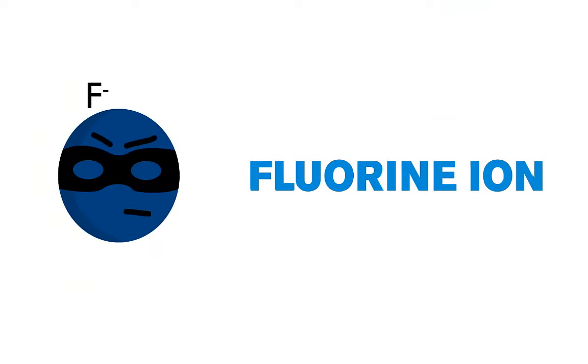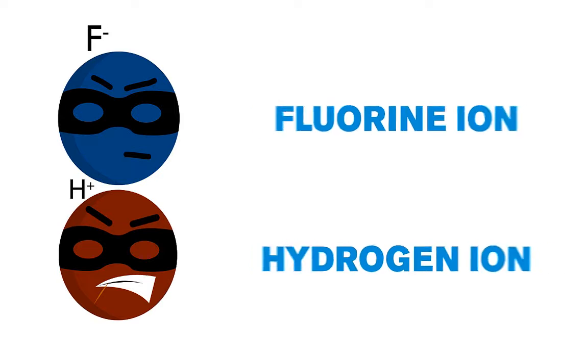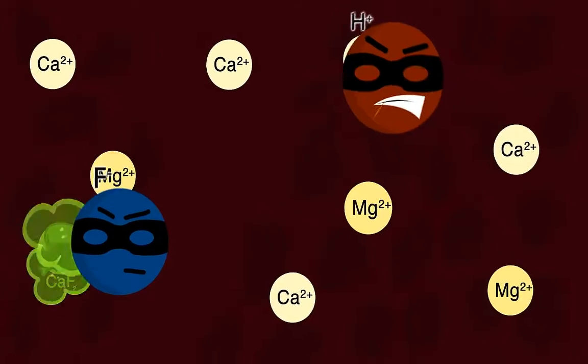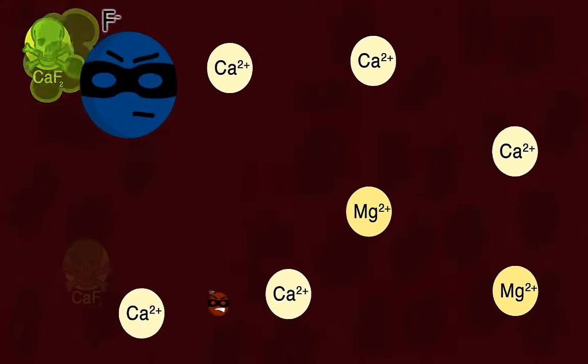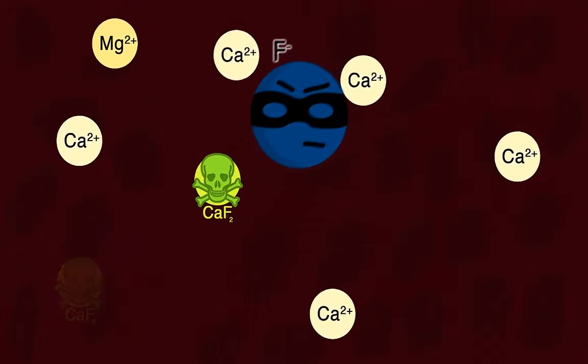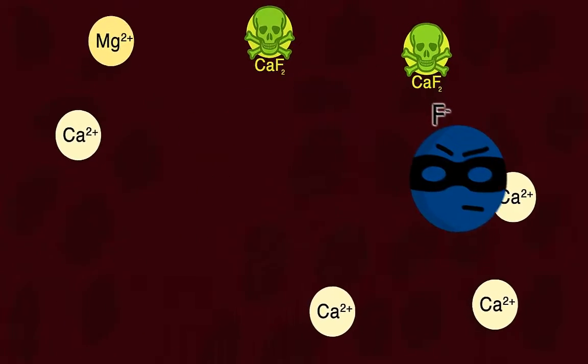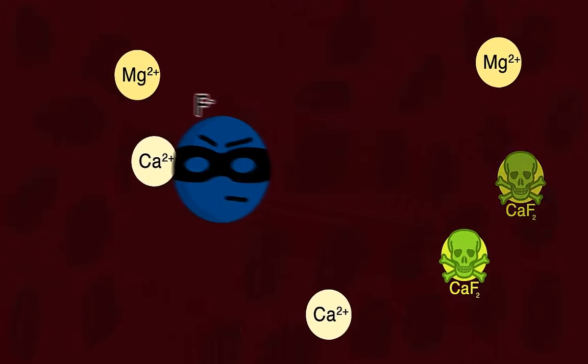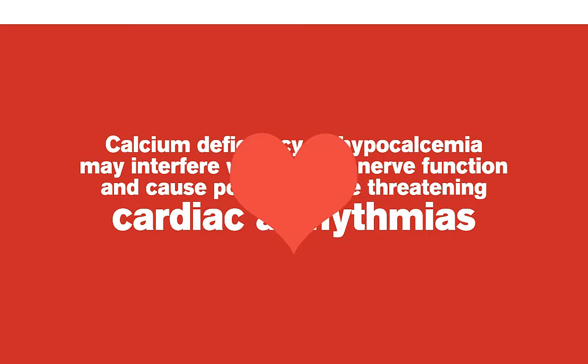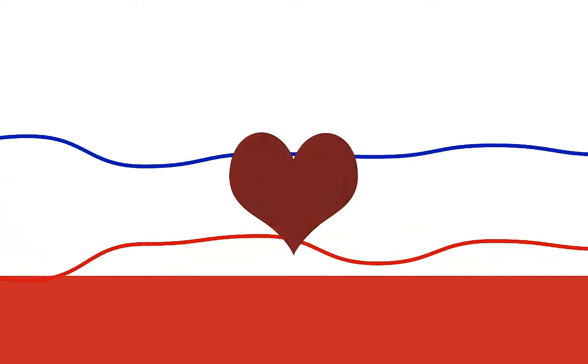HF then wreaks havoc by releasing its acidic hydrogen ion and fluorine ion in the presence of calcium and magnesium cations, interfering with cellular metabolism causing cellular death and necrosis of deep tissue. If that is not enough, the fluorine ion's high affinity for calcium and magnesium may exceed the body's ability to mobilize replacement quantities, and systemic toxicity occurs in the form of hypocalcemia. Significant calcium deficiency, or hypocalcemia, may interfere with normal nerve function and cause potentially life-threatening cardiac arrhythmias.